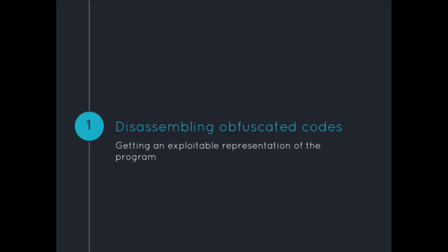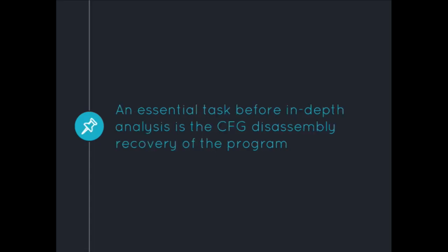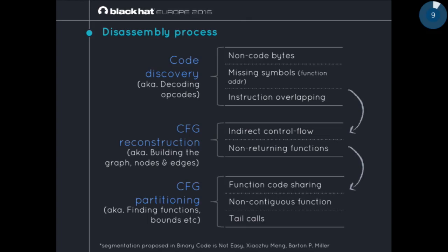What's it like to disassemble obfuscated code? The idea is to recover some usable representation of the program, getting rid of everything that is useless. This is an essential task before any in-depth analysis. The disassembly process can be divided into three steps. The first step is code discovery — finding into the big block of bytes what's code and what's data. It implies dealing with instruction overlapping. On x86, the same byte can be shared between two different instructions depending on where you start decoding.